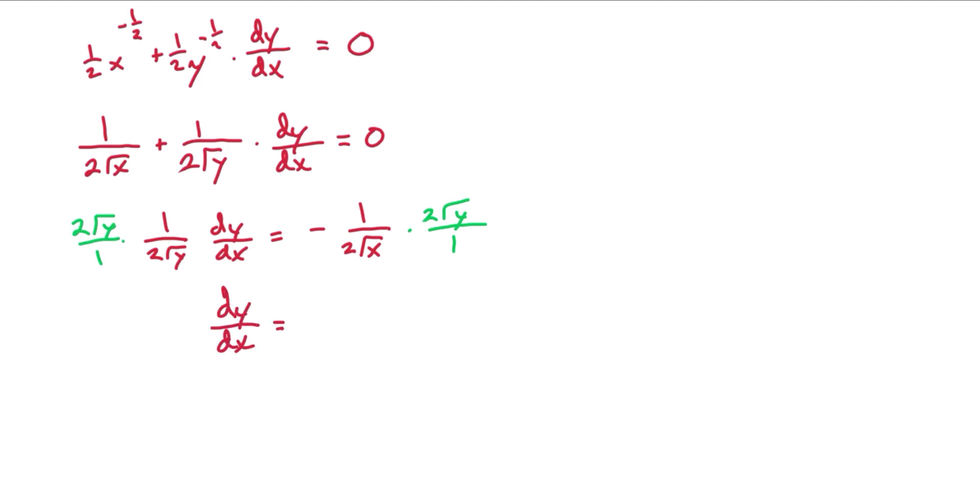dy dx is negative square root of y over the square root of x. And so technically we've isolated dy dx but notice it does not look like the original from earlier. But we can plug in what y is. Earlier we said that y is equal to 4 minus the square root of x squared. So let's replace y with that value.